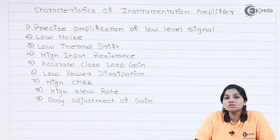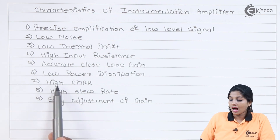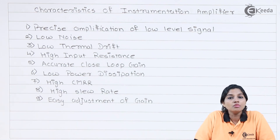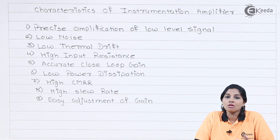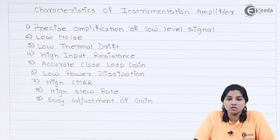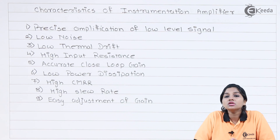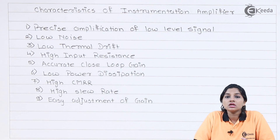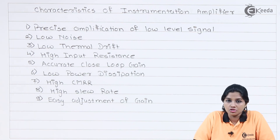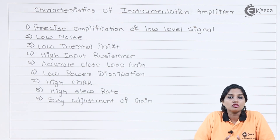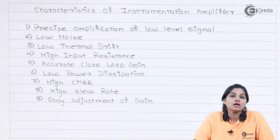The next characteristic of the instrumentation amplifier is high CMRR — common mode rejection ratio. The common mode rejection ratio is basically used to reject the common mode signal present at the input of any amplifier circuit. Most commonly, the signal present at both inputs of the op-amp is the noise signal. Therefore, the noise signal is required to be low, especially in biomedical applications or any application where stable and accurate output is required. In the case of the instrumentation amplifier, the CMRR should be as high as possible — practically high, and ideally infinite.